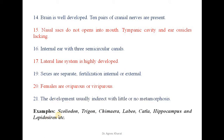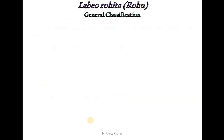Examples of superclass Pisces include Scoliodon, Trigon, Chimera, Labeo, Catla, Hippocampus, and Lepidocydon. We will begin with Labeo rohita.